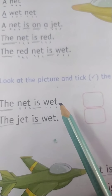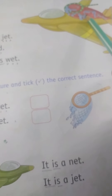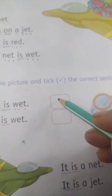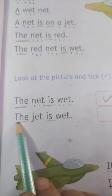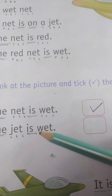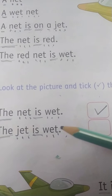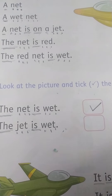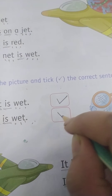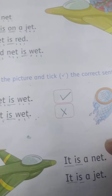Is it correct? Net kaisa tha? Wet tha na net? Yes. So this is the correct sentence: the net is wet. The jet is wet — kia jet wet tha? No. So this is a wrong statement. This is incorrect.